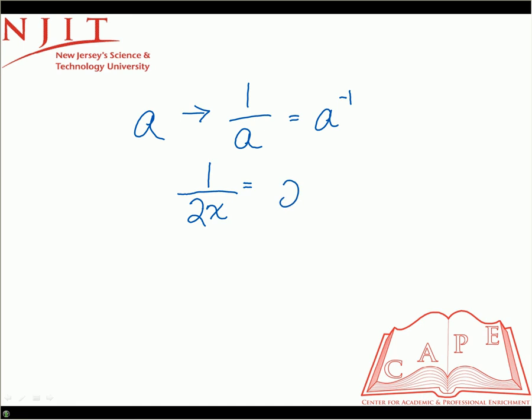it would be 2x, because that's what was in the denominator, so we just flipped it, all raised to the negative 1.